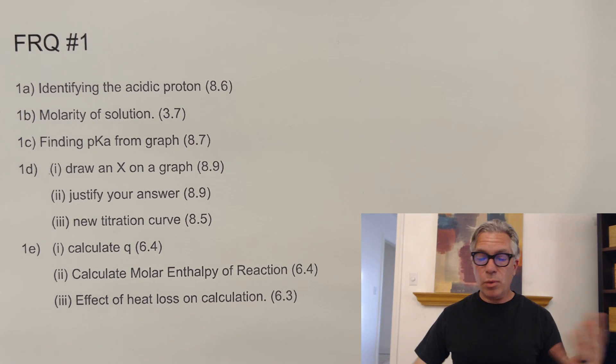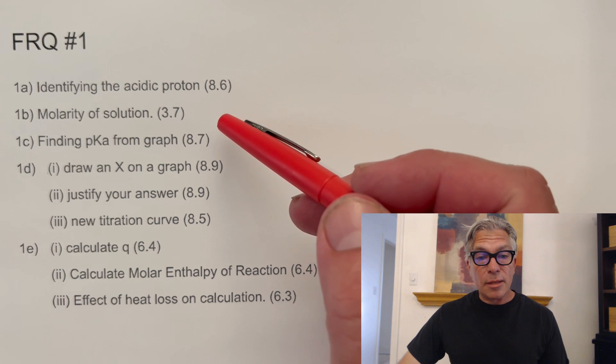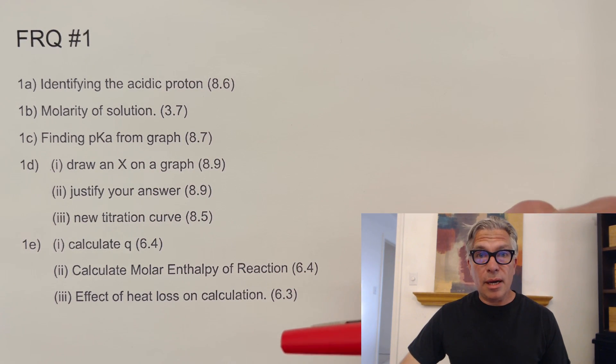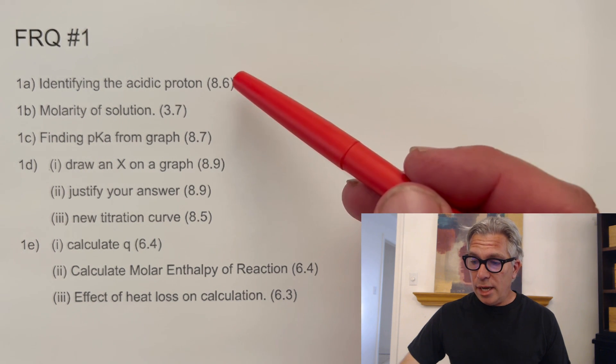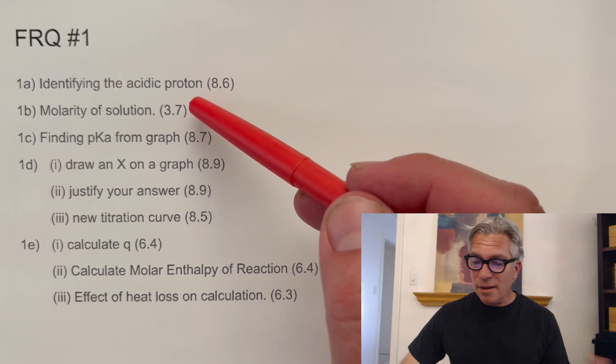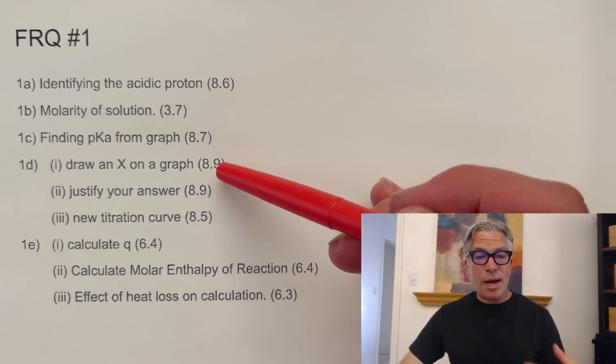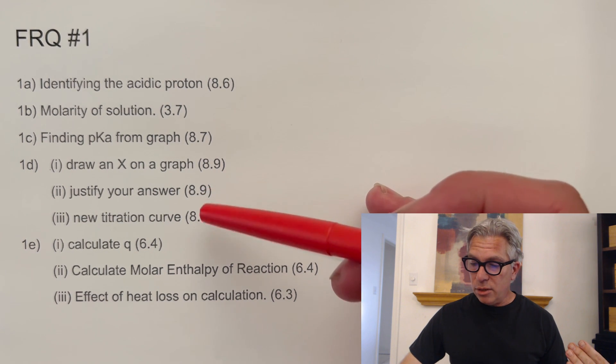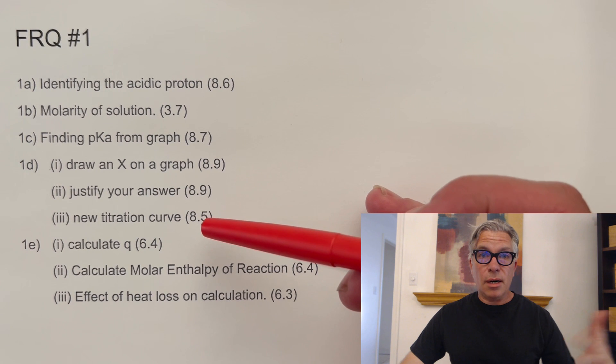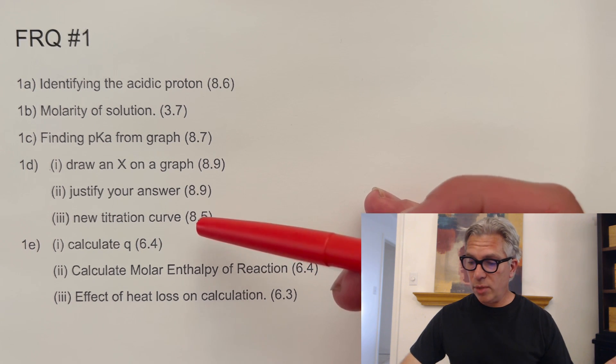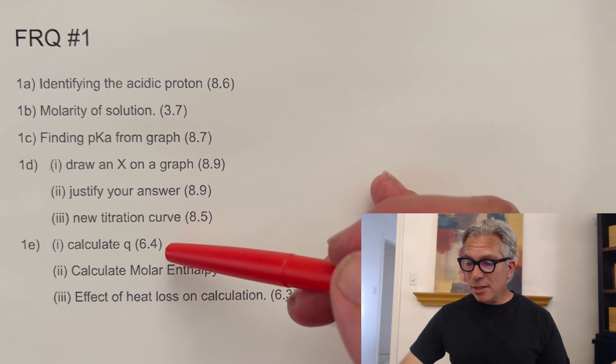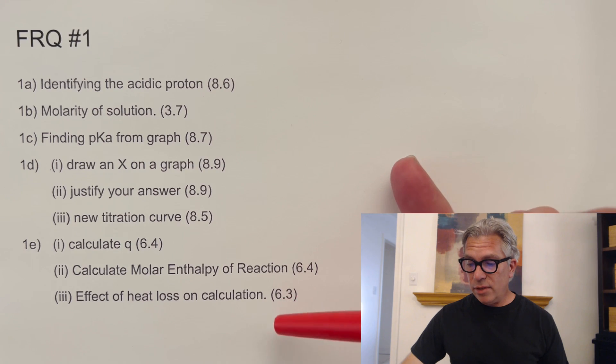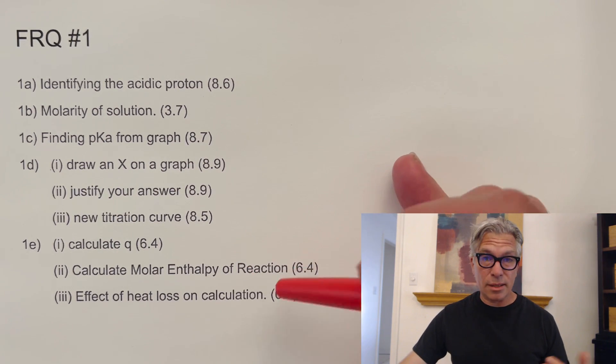But according to FRQ number one, we were asked to identify the acidic proton, calculate the molarity of a solution, and in these parentheses over here I identified as close as possible the unit and subtopic that each one represents. So that was at 8.6. Molarity is in 3.7. There's our unit 3 right there. 8.7, 8.9. Draw an X on a graph for a titration to show where the ratio would be, where it should be. Justify your answer. That was another point. A new titration curve. You had to sketch another one on top of the one that was there based on a change that was made. And that's again unit 8. And then we get into some thermo, calculating Q for some process, calculating the molar enthalpy of reaction, the effect of heat loss on calculations. So we ended up in unit 6 on FRQ number one.